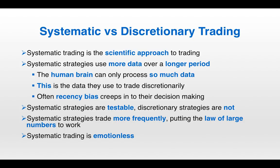Basically your brain is not as good a data processor as a computer is. Through systematic quant trading strategies, you can look at a longer period — you can easily go back 20, 30, even 40 years. You can look at more data, do this for more markets, build a bigger picture, and there's no recency bias.